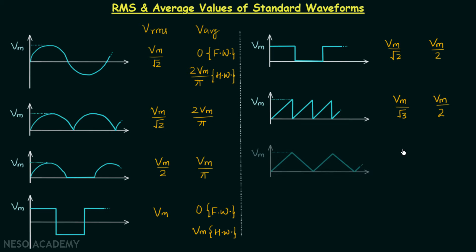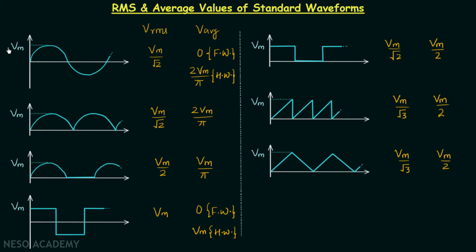The final waveform has the same RMS value and the same average value as the sawtooth wave. So this covers the RMS and average values of some standard waveforms — you should remember them.